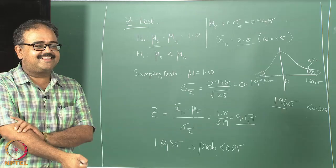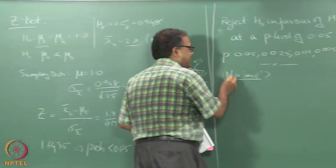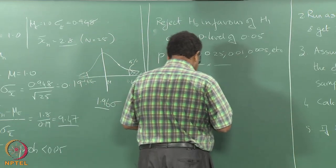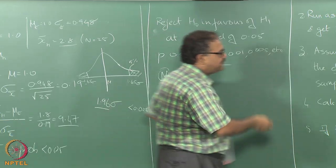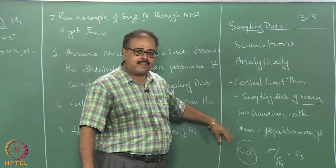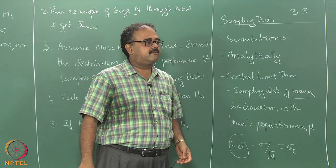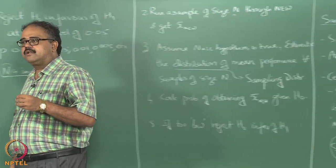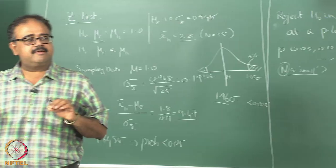Less than 30 is considered small. If you think about it, it turns out that the central limit theorem works fine only if the sample sizes are reasonably large. Suppose my sample size is 5 or 10 — then it is no longer clear that I can use the central limit theorem.